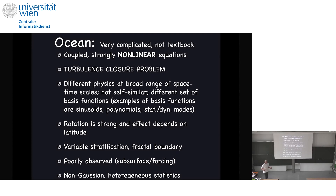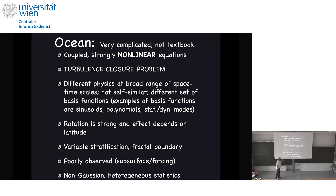Rotation is strong and the effect depends on latitude, which destroys some of the symmetry. We have very variable stratification and fractal boundaries — in the Gulf of Mexico we have a coastal zone, a transition zone, and then the deep Gulf of Mexico which behaves like the open ocean. Our sampling does not satisfy Nyquist–Shannon sampling requirements, especially for subsurface data, and our statistics are non-Gaussian, heterogeneous, and non-stationary.